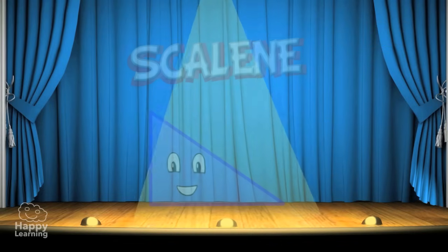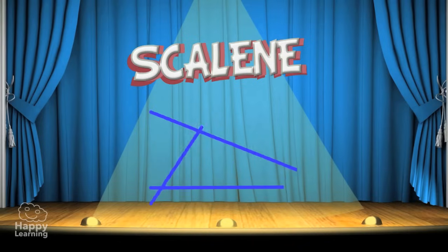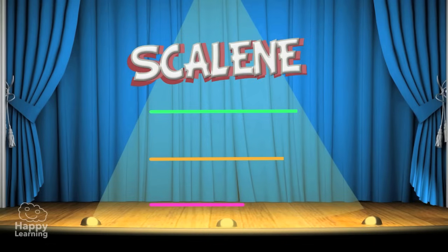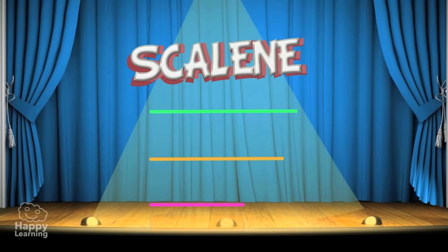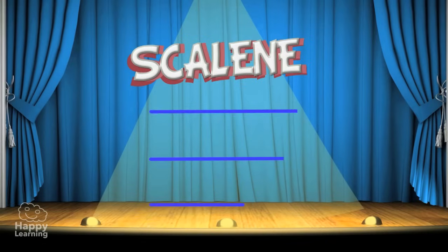And finally let's look at a scalene triangle. All three sides are different lengths. Easy, eh? A scalene triangle is the one with three different length sides. None of its sides are equal.